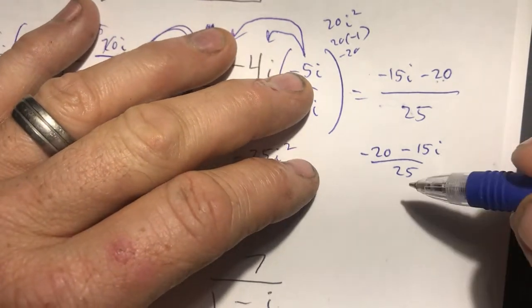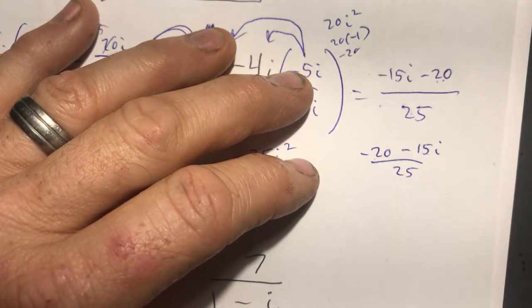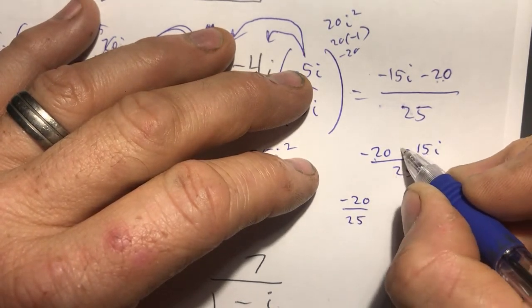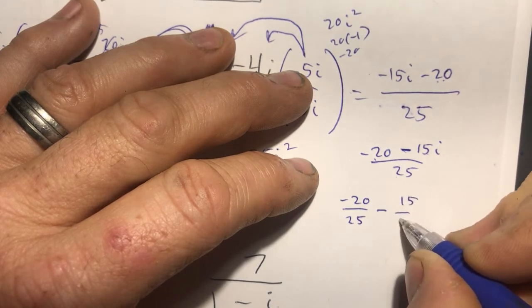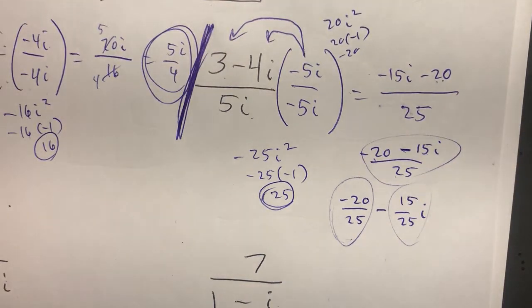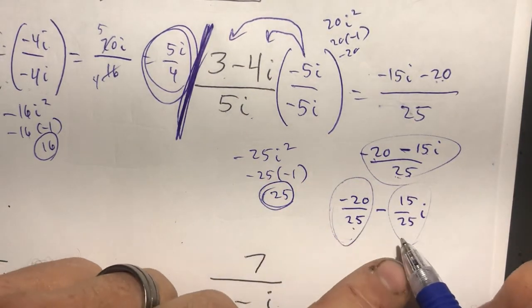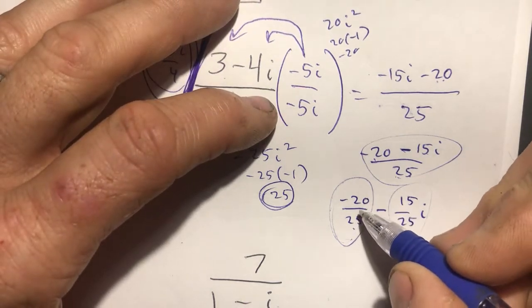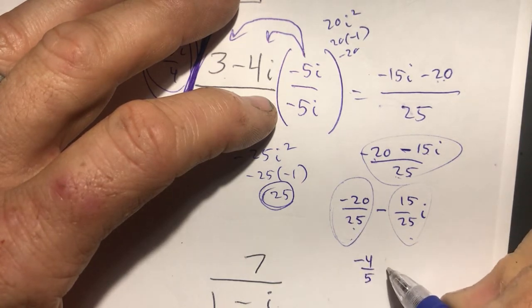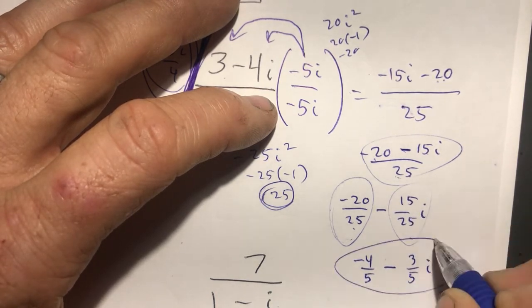We usually want the real part first, so it's negative 20 minus 15i over 25. When we have a complex number in a fraction, we split it up: negative 20 over 25 minus 15 over 25 i. Simplifying: 5 goes into 20 four times and into 25 five times, giving negative 4 over 5. And 5 goes into 15 three times and into 25 five times, giving negative 3 over 5 i.